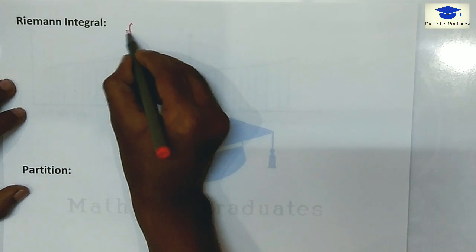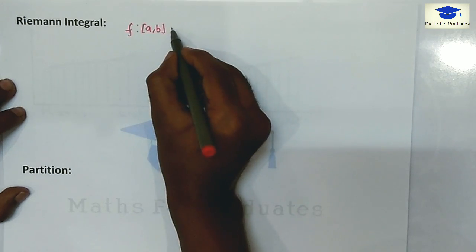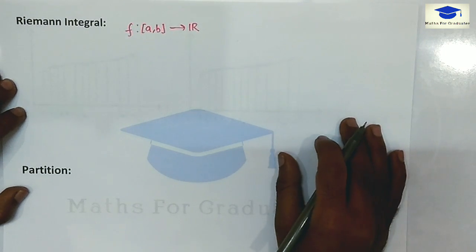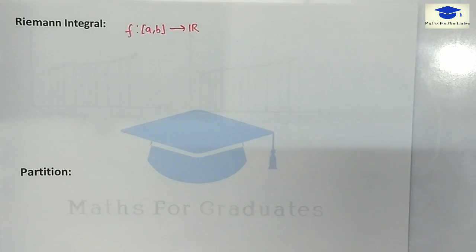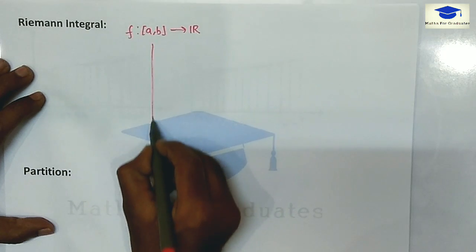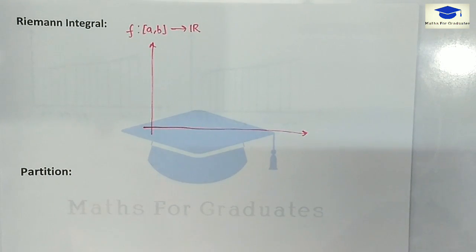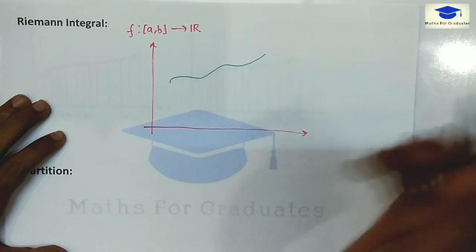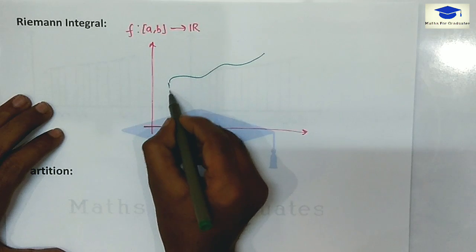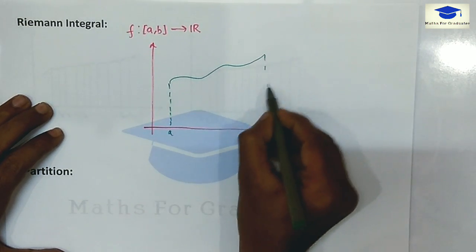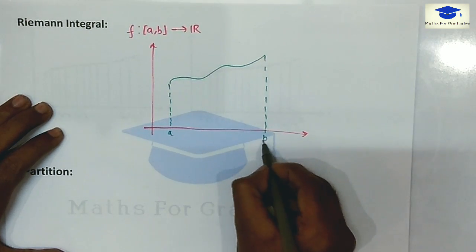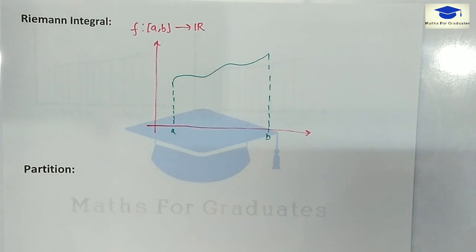Consider a function f bounded in the closed interval [a, b] mapping to the real number set. Whenever we think about integrals, the first thing that comes to mind is the area of the function between the x-axis. Consider the graph of the function f given in the closed interval [a, b]. We are interested in finding this area, and for this we will use the approach of Riemann.